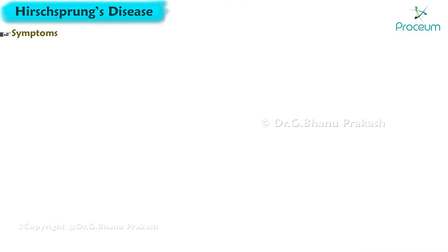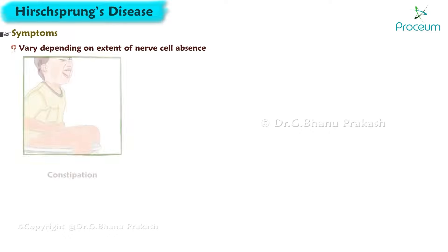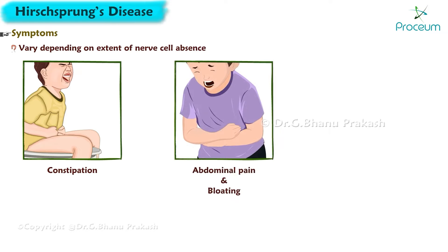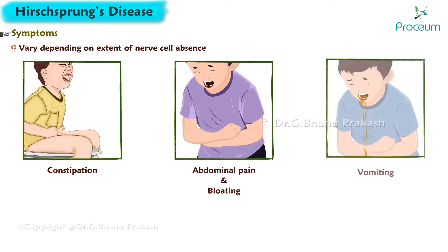The symptoms of Hirschsprung's disease can vary depending on the extent of nerve cell absence, but common symptoms include constipation, abdominal pain, bloating, and vomiting.